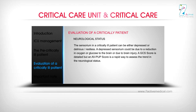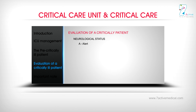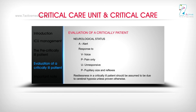Neurological status: The sensorium in a critically ill patient can be depressed, delirious, or restless. A depressed sensorium could be due to reduced oxygen or glucose to the brain, or due to brain injury. A GCS score is detailed, but an AVPU score is a rapid way to assess the neurological trend: A — Alert, V — Response to Voice, P — Response to Pain only, U — Unresponsive, plus pupillary size and reflexes. Restlessness should be assumed to be due to cerebral hypoxia unless proven otherwise.